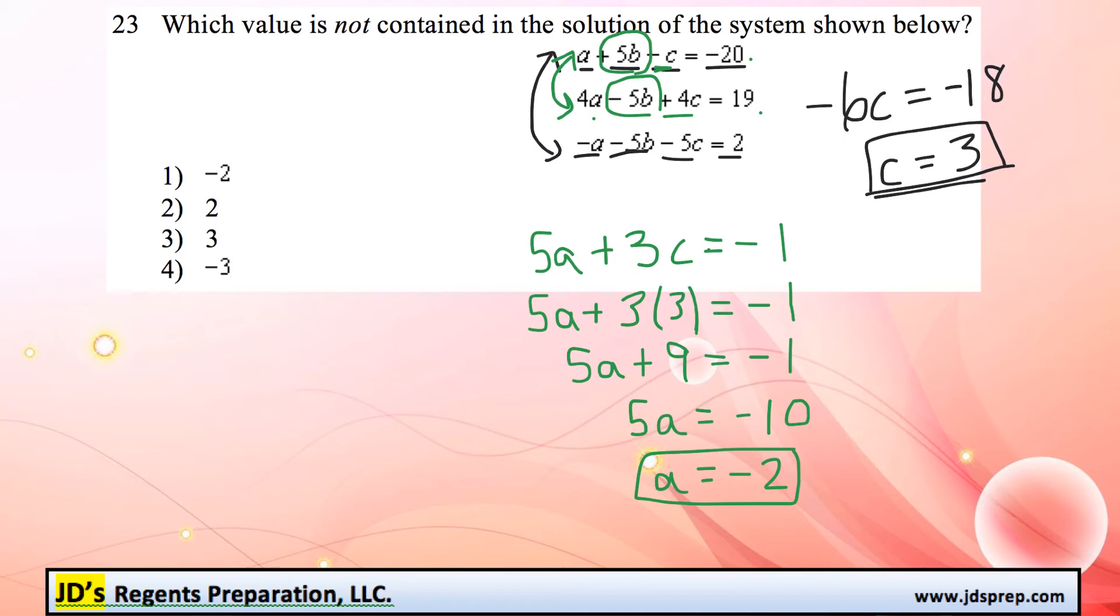All right, now that we've got two of the three variables figured out, we can get the last one by taking one of the three equations. Let's take the first one, because it seems to be the simplest. And we're going to replace a and c with the values that we know they now represent. So a is negative 2. We don't know b yet, so we're just going to keep that the same. And we know c has a value of 3.